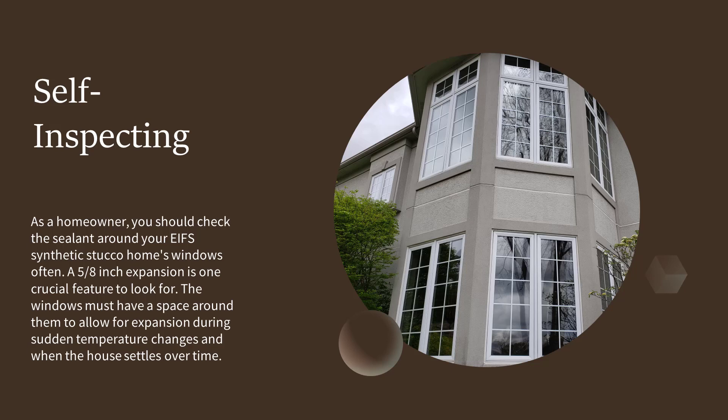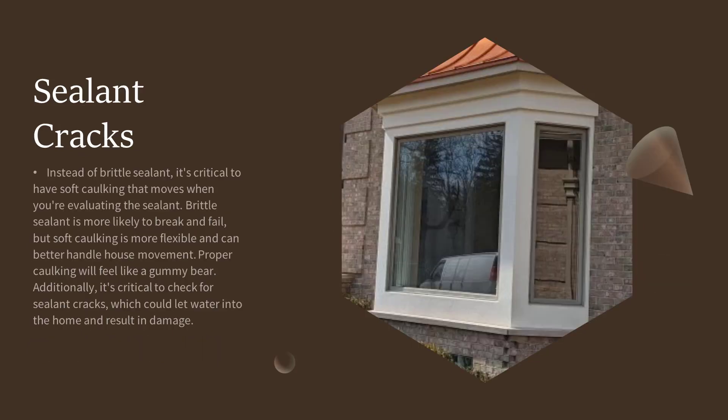The expansion gap is necessary during sudden temperature changes and when the house settles over time. Rather than brittle sealant, it's critical to have soft caulking that moves. When evaluating the sealant, brittle sealant is more likely to break and fail, but soft caulking is more flexible and can better handle house movement. Proper caulking will feel like a gummy bear.